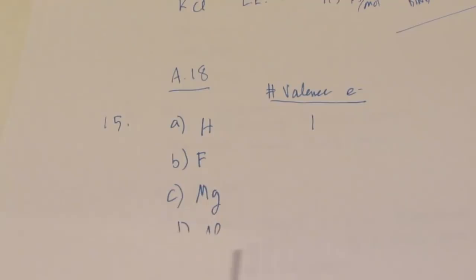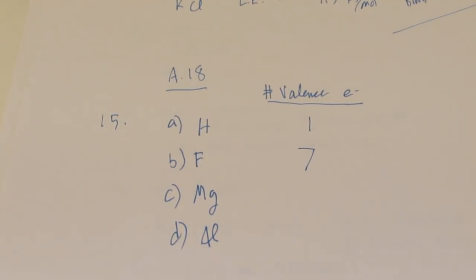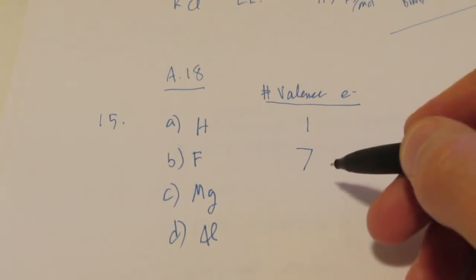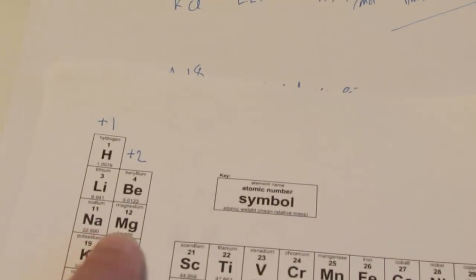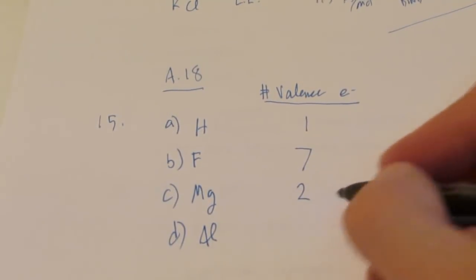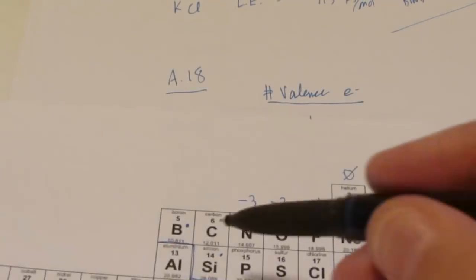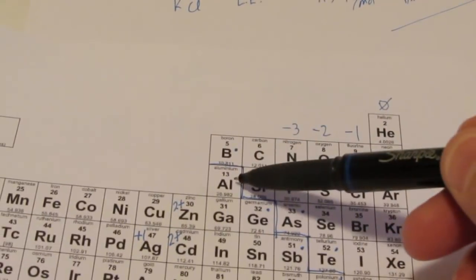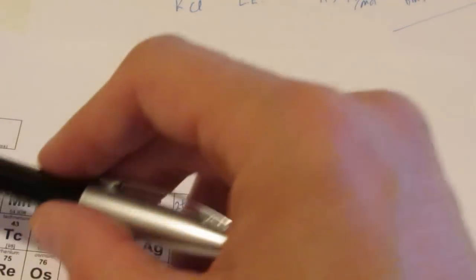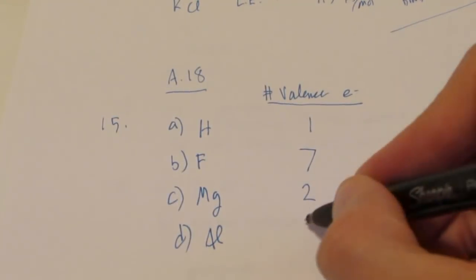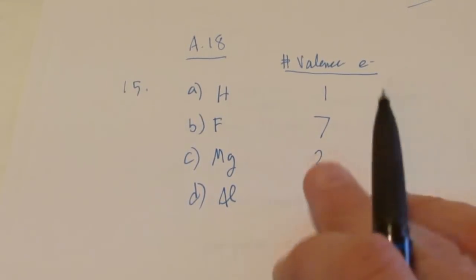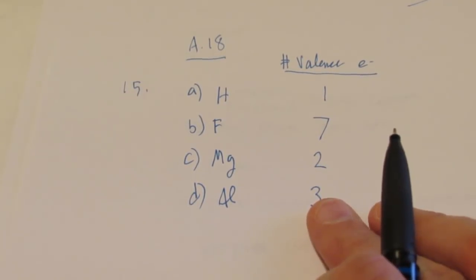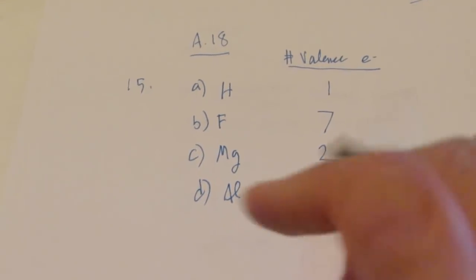Fluorine's in group number 17, so it has 7 valence electrons. Remember its configuration ends with 2s², 2p⁵ — a total of 7 valence. Magnesium is in group 2; its configuration ends with 3s², so it has 2 valence electrons. And aluminium is over in group 13; its configuration ends with 3s², 3p¹ for a total of 3 valence. Knowing how to find the number of valence electrons is very important when we start drawing Lewis structures.